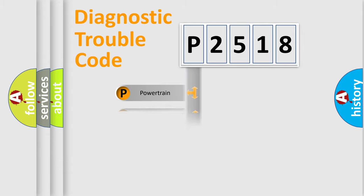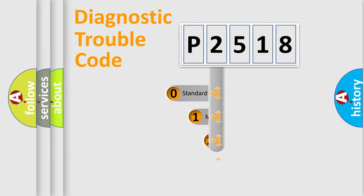Powertrain, Body, Chassis, Network. This distribution is defined in the first character code.